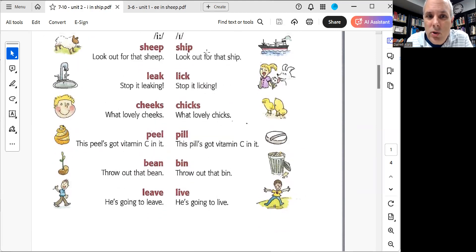Now let's do the red words one more time, but this time try to say them with me. I'll try to go slow and we'll go all the way from top to bottom. You can try to follow my cursor here. One, two, three. Sheep, ship. Leek, lick. Cheeks, chicks. Peel, pill. Bean, bin. Leave, live. Good.